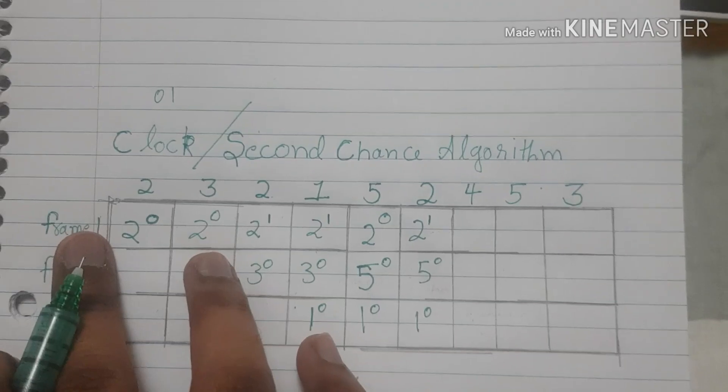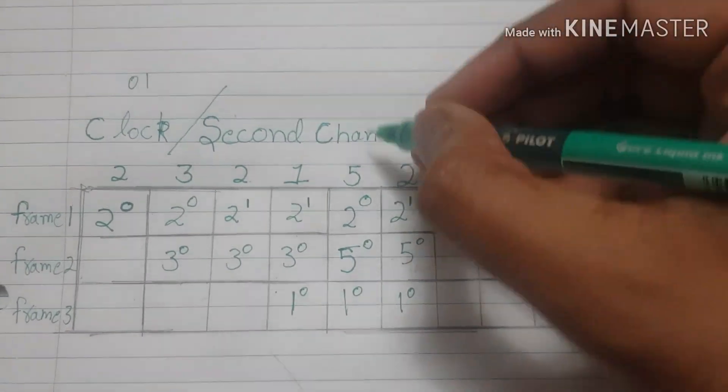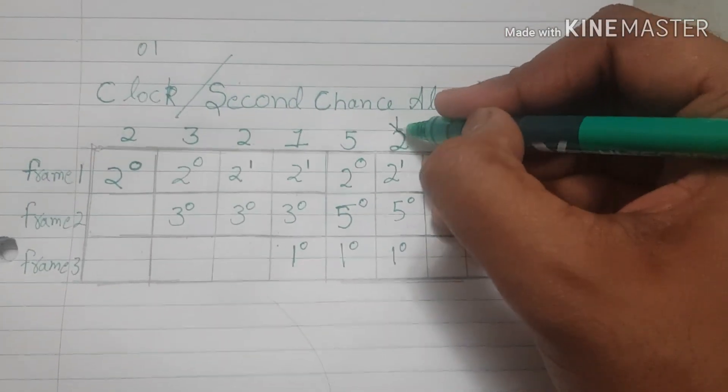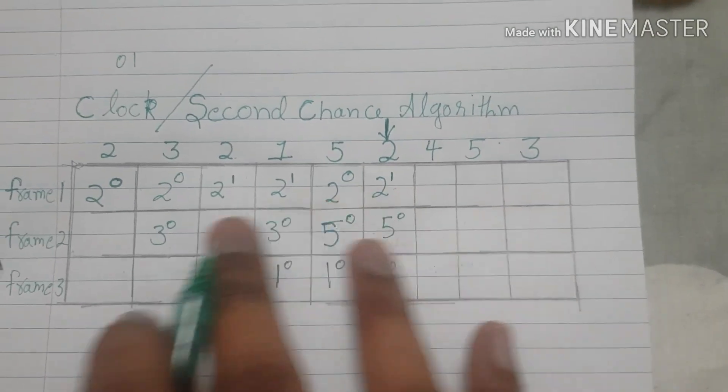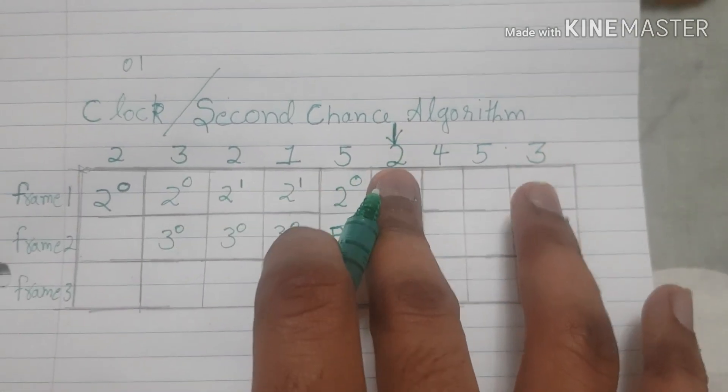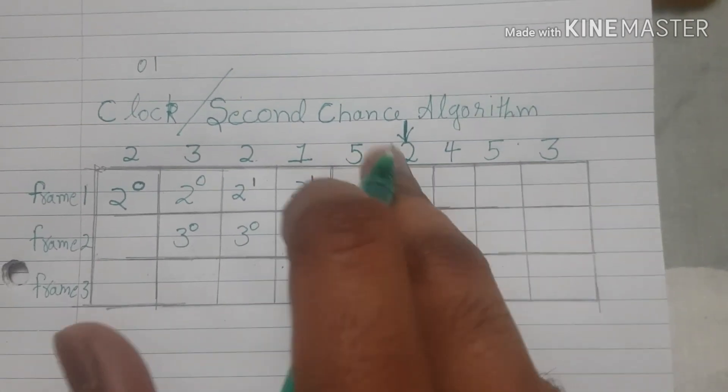Whenever something hits, its arrival time is changed to the point where you are looking at. So basically its arrival time is this. So this is the last one now. First is 1, then 5, then 2.